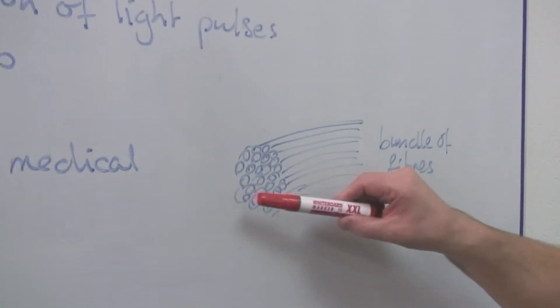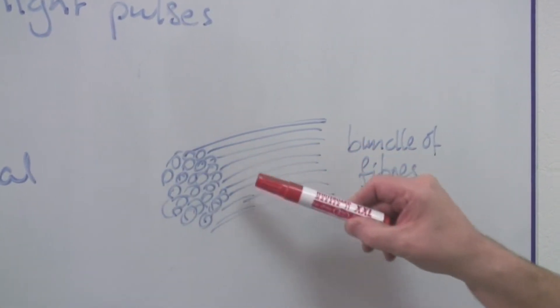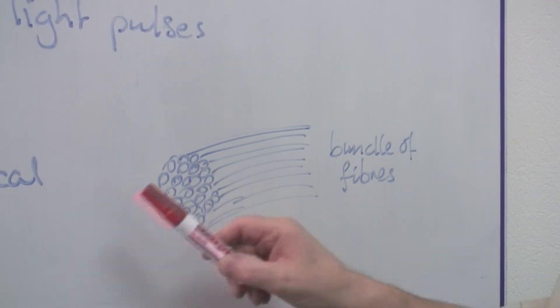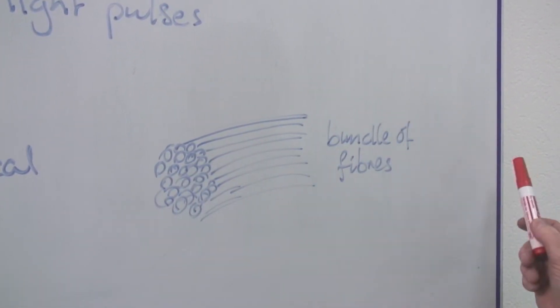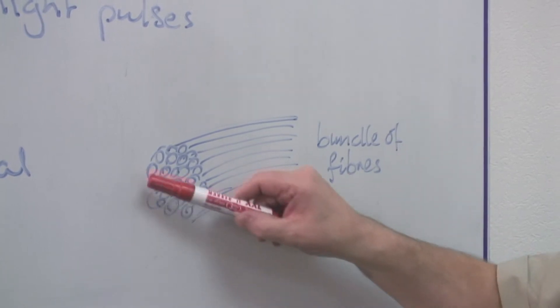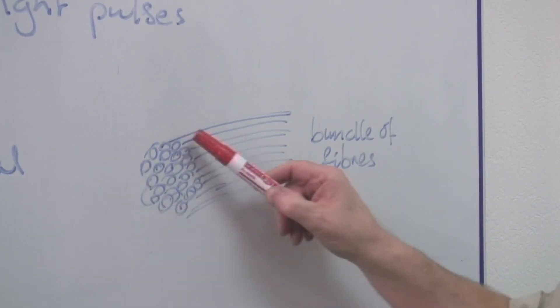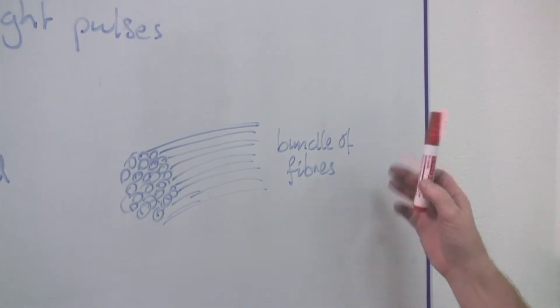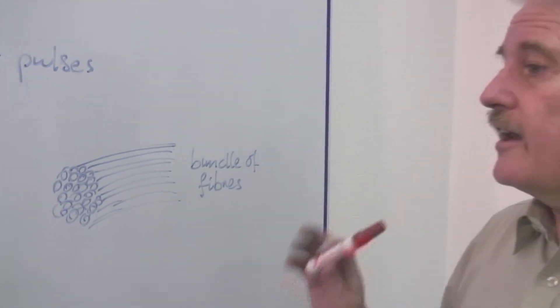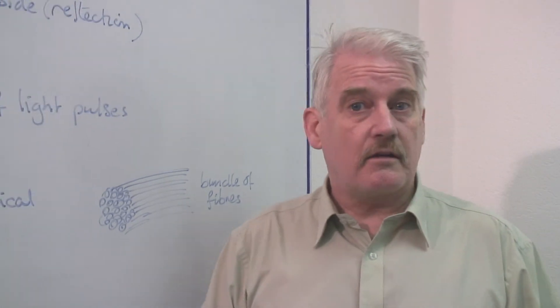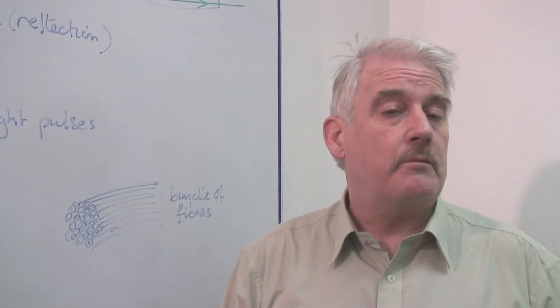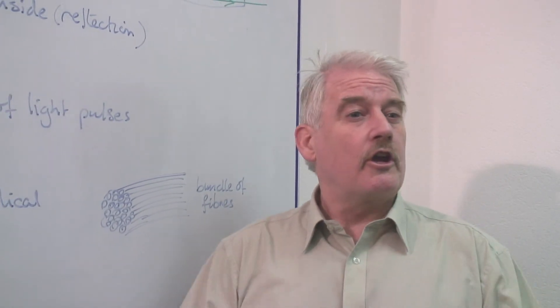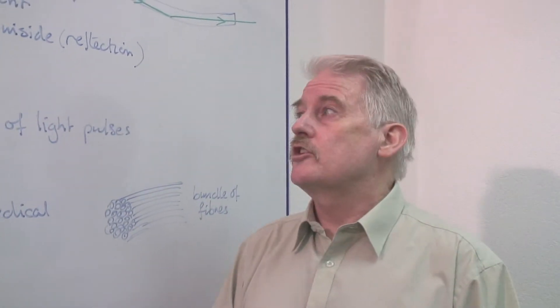The way this is done is when you've got a huge number of fibres, some can carry light one way and others can carry a signal back the other way. So you can create an image on the end and that image is brought back to the opposite end where it's reconstructed. This is a very important use for doctors. They can actually look into somebody's stomach, see an ulcer forming and so forth.